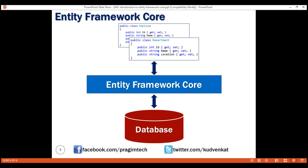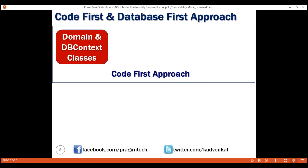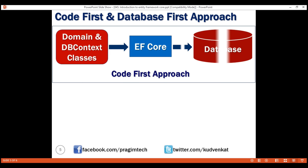EF Core supports both the code first approach and the database first approach. However, with the database first approach, there is very limited support in EF Core at the moment. With the code first approach, we first create our application domain classes like employee, department, customer, etc. In addition to these domain classes, we also create a special class that derives from the Entity Framework DB context class. Based on these domain and DB context classes, EF Core creates the database and the relevant tables.